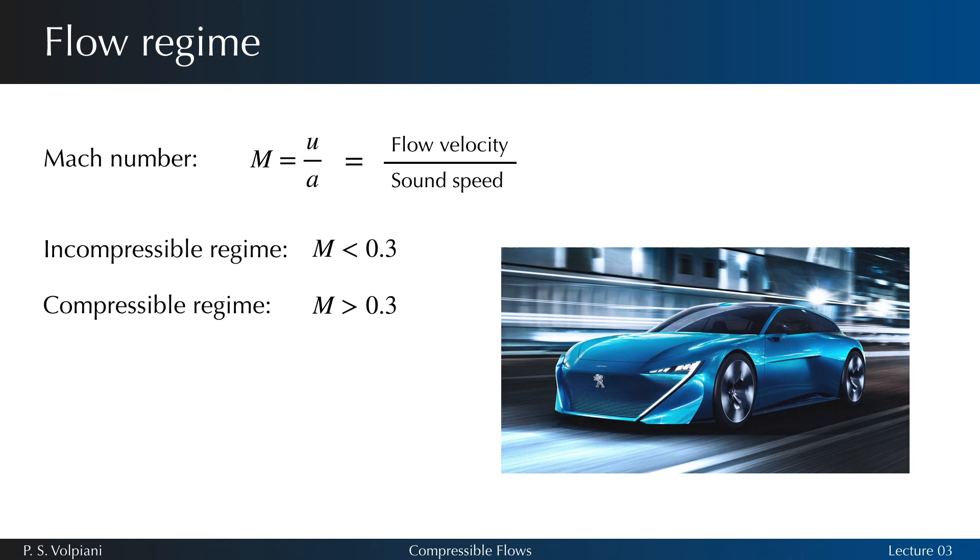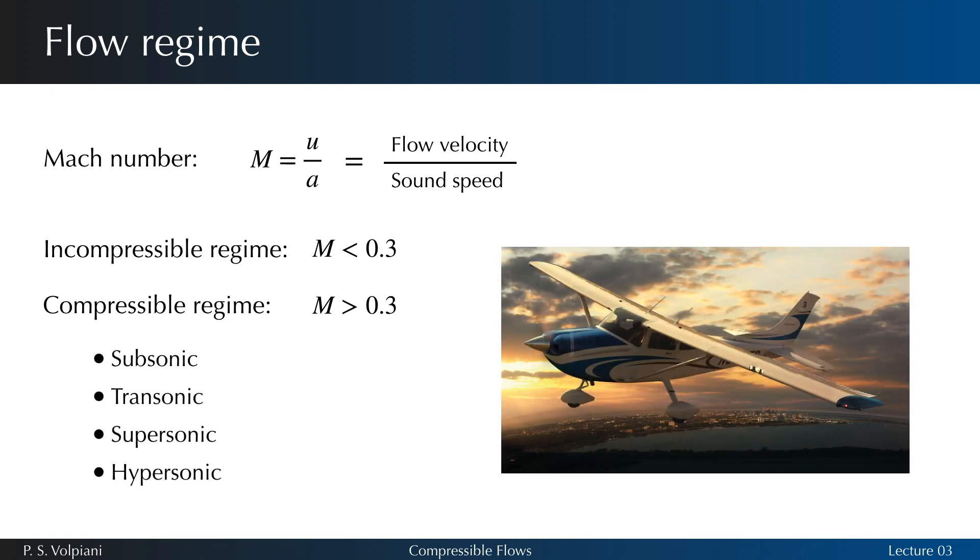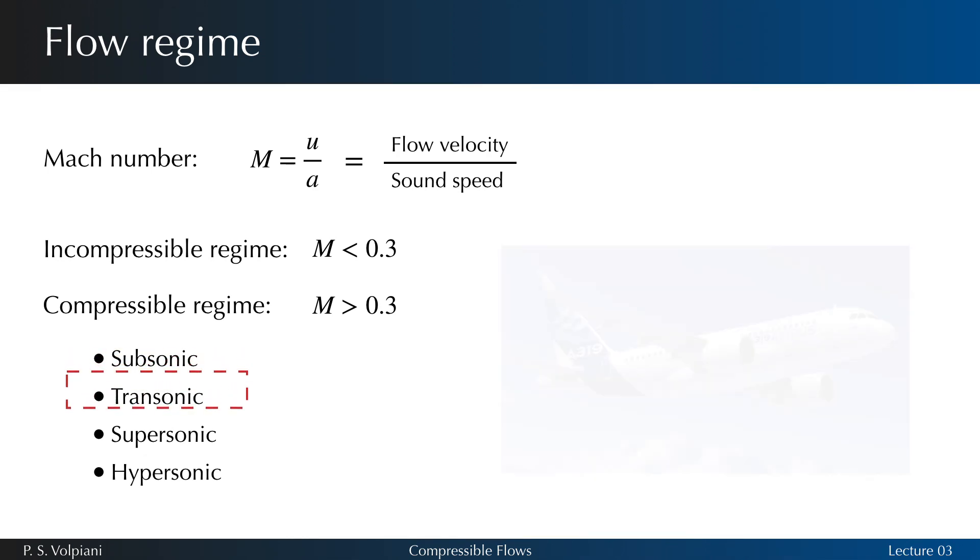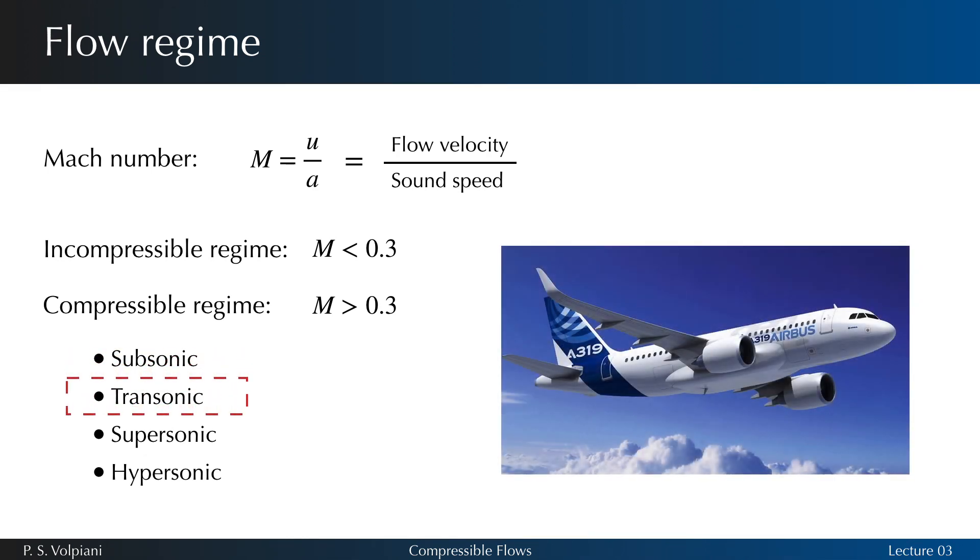The compressible regime can be divided into four branches. We refer to the subsonic regime when the fluid velocity around the body remains everywhere inferior to the local speed of sound. In other words, the Mach number is less than 1 everywhere. When there are zones in the flow where the local Mach number exceeds unity while the generating flow, the upstream condition, remains subsonic, we are in the transonic regime.